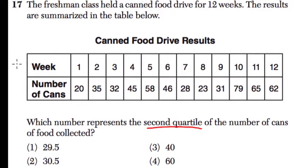And you can see that there are the 12 weeks up here. And the results are summarized here. Every week they're selling a different number of cans here. And they want to know basically what number represents the second quartile of the number of cans of food collected.